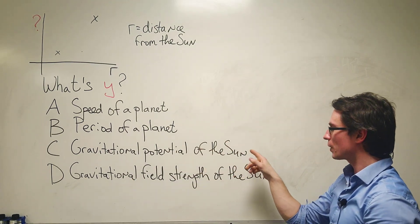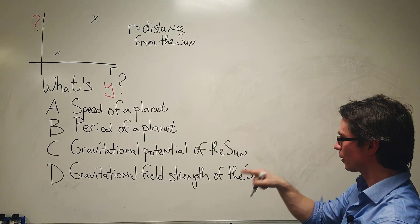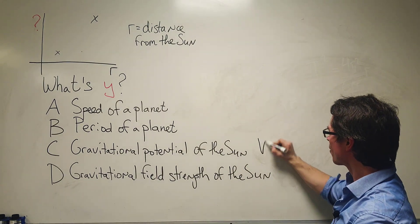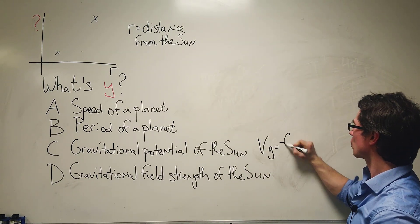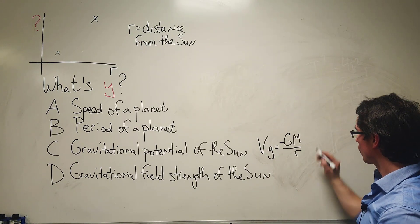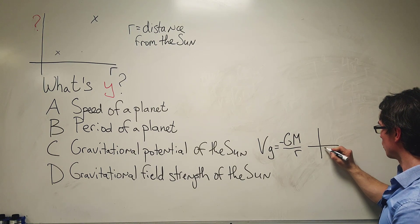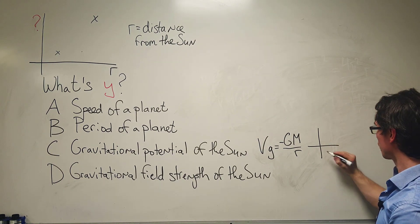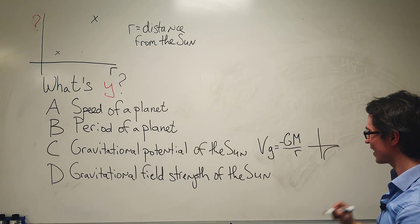So C and D, the gravitational potential of the sun and the gravitational field strength. Well we know that the gravitational potential is equal to minus GM over r, so on a graph it will be in this quadrant over here and will look something like this.